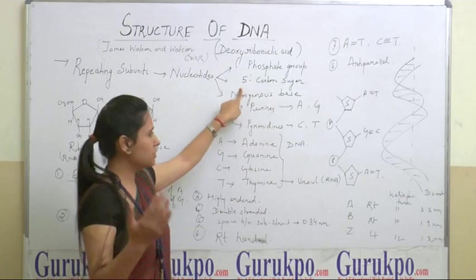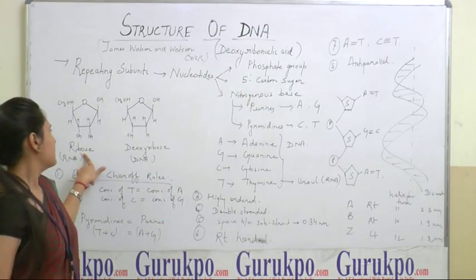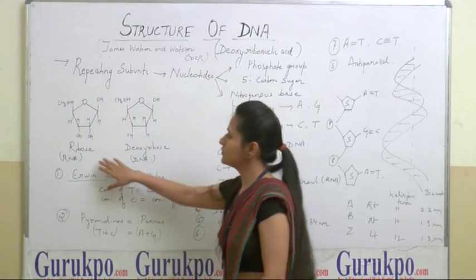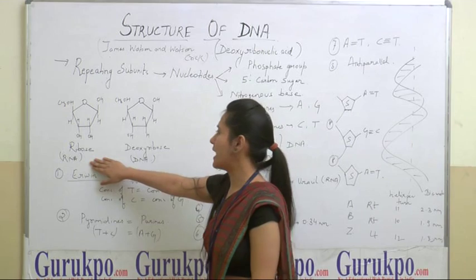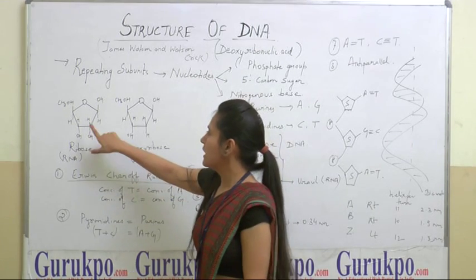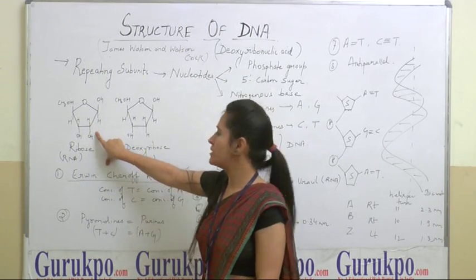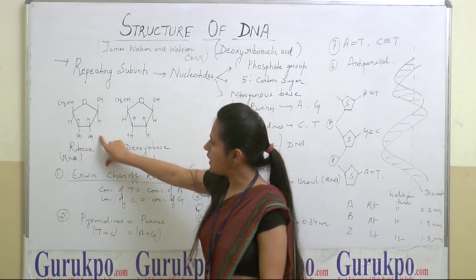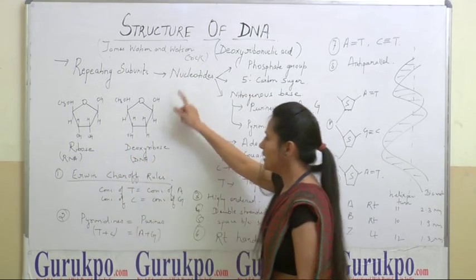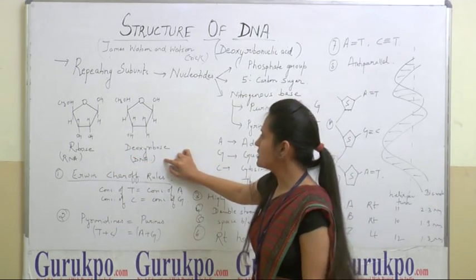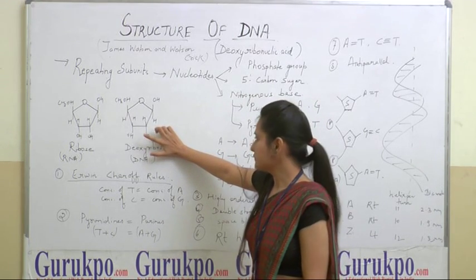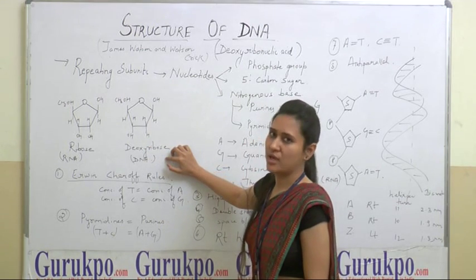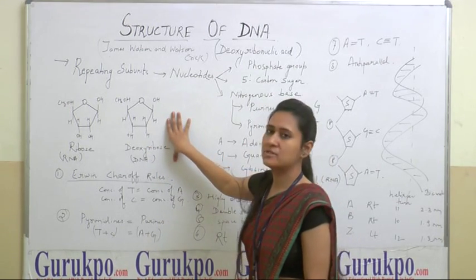Talking about sugar, there are two kinds: ribose and deoxyribose. Ribose is present in case of RNA, that is ribonucleic acid. It is called ribose because at the 2-prime position, a hydroxyl group — an oxygen atom — is attached with the hydrogen. DNA has deoxyribose because there is no oxygen with the hydrogen at its 2-prime end. That is why it is called deoxyribose, and this sugar is present in case of DNA.